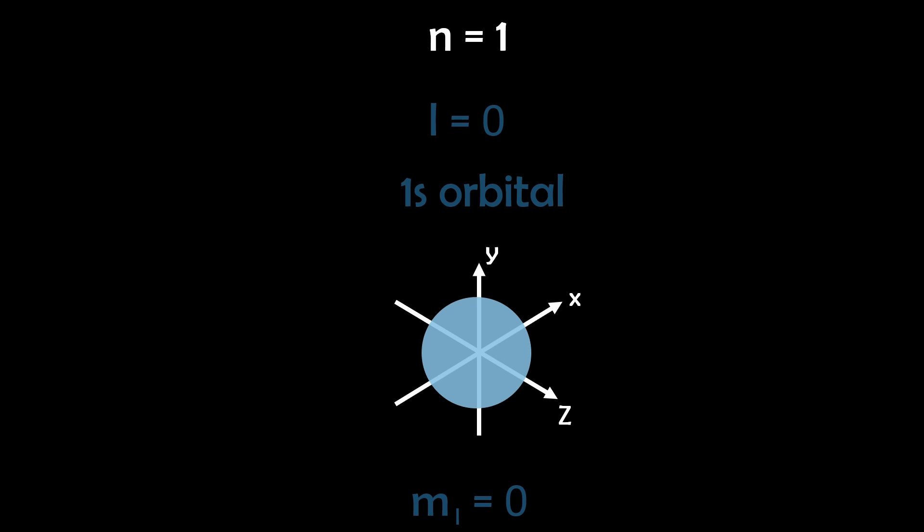For n equals one, the simplest level, we encounter the 1s orbital. Here L equals zero and M sub L is also zero, indicating it's a spherical orbital with room for two electrons of opposite spins. It's the lowest energy orbital, making it the first to be filled.